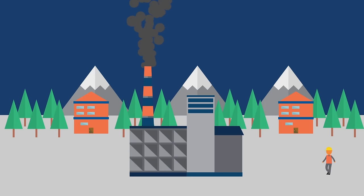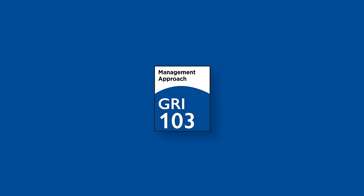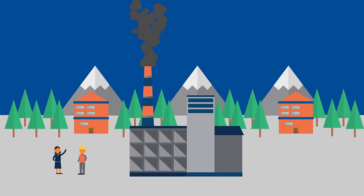GRI 102 General Disclosures is for reporting contextual information about your organization and its reporting practices. You use GRI 103 Management Approach to report how you manage your material topics.